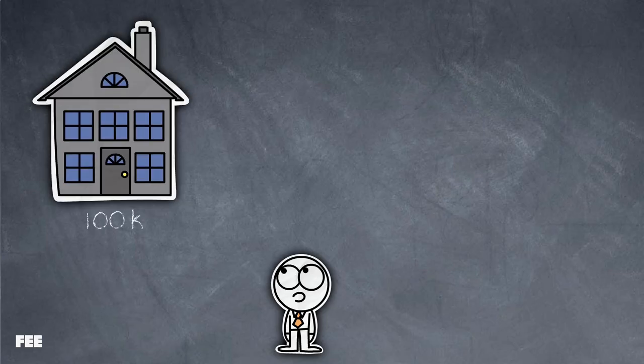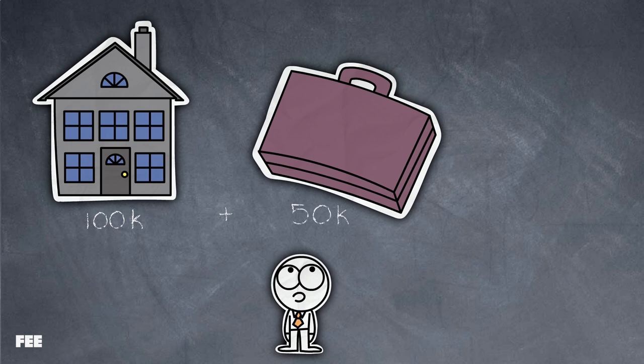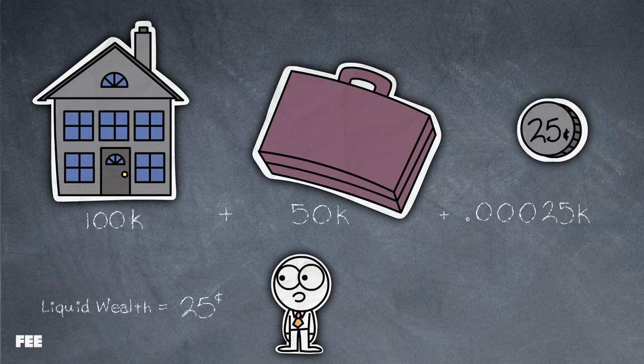So if you have a house which is worth $100,000, own a business which is worth $50,000, and have a quarter in your pocket, your liquid wealth is $0.25, and your net worth is $150,000.25.